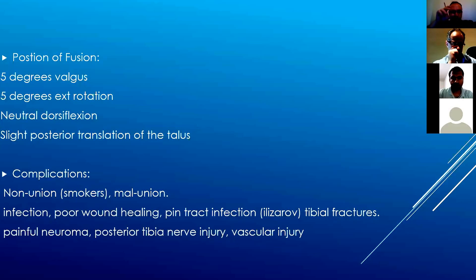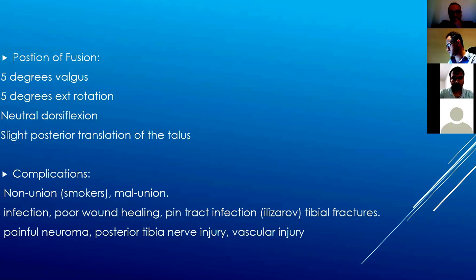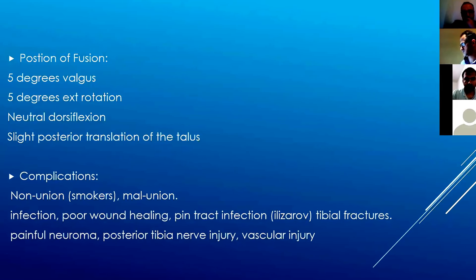Complications of ankle arthrodesis are important to know — and you need to cover them in the history too, for example smoking history. Smokers have a very high chance of non-union; many ankle surgeons will not perform ankle fusion in smokers until they quit. Other complications include malunion — if fixation is inadequate or the position is wrong — infection, poor wound healing, pin track infection, painful neuroma, sural nerve injury, vascular injury, and the standard post-surgical complications.